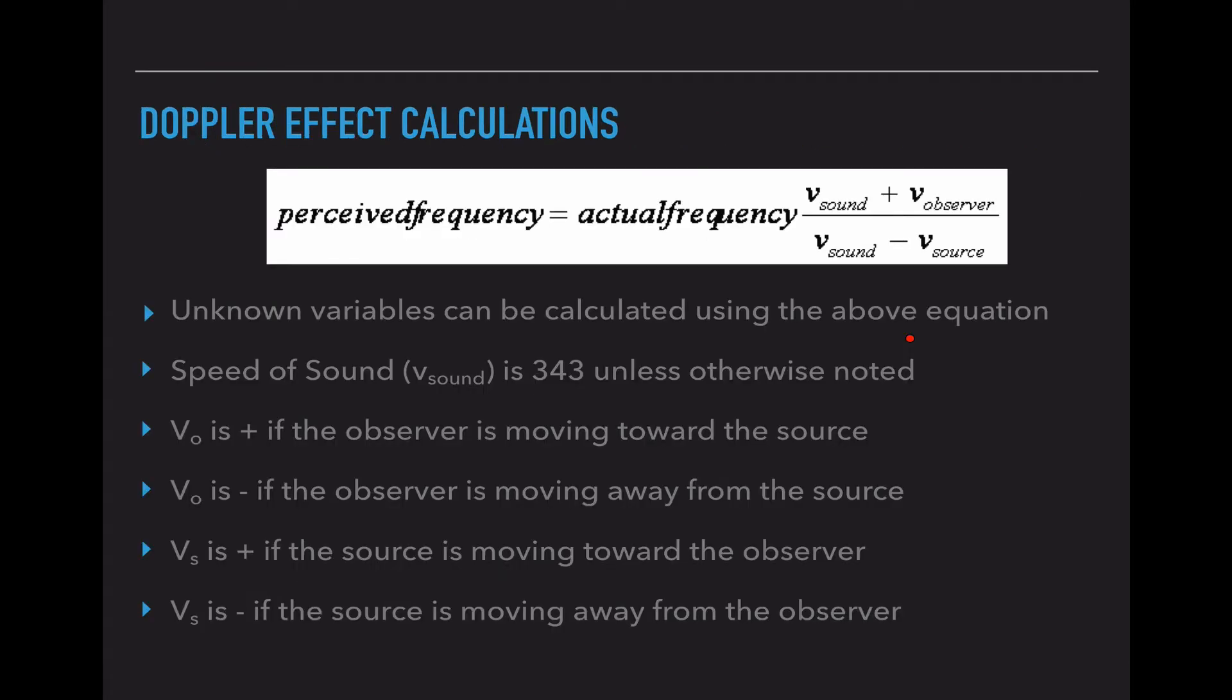But here's the important part about Doppler effect, the equation. Our unknown variables can be calculated using this equation, but it's a pretty in-depth and lengthy equation. Our perceived frequency is equal to the actual frequency times the quantity of this fraction bar thing.